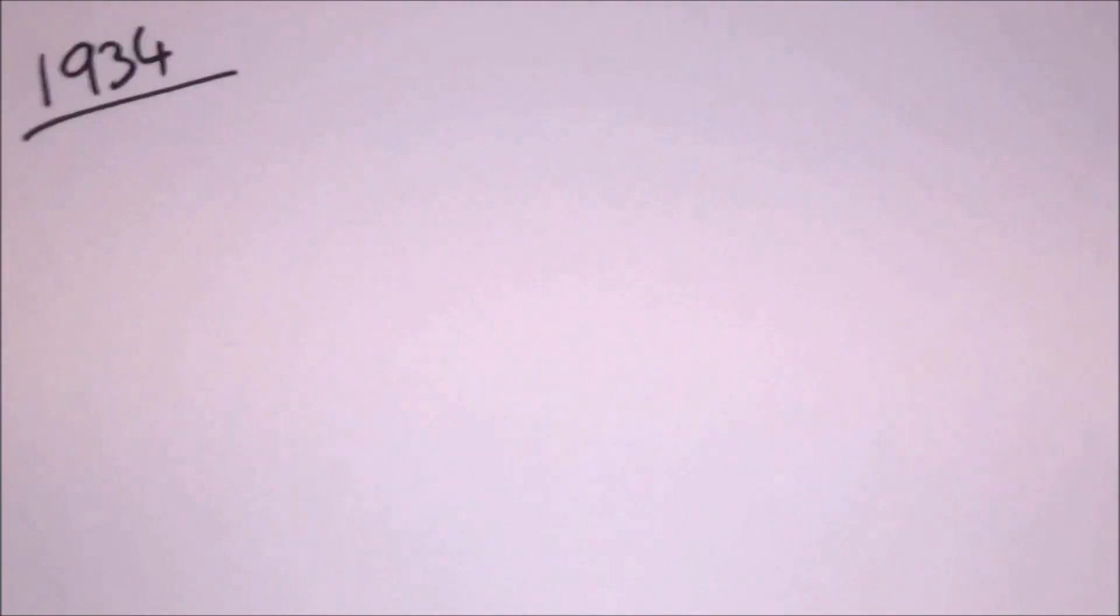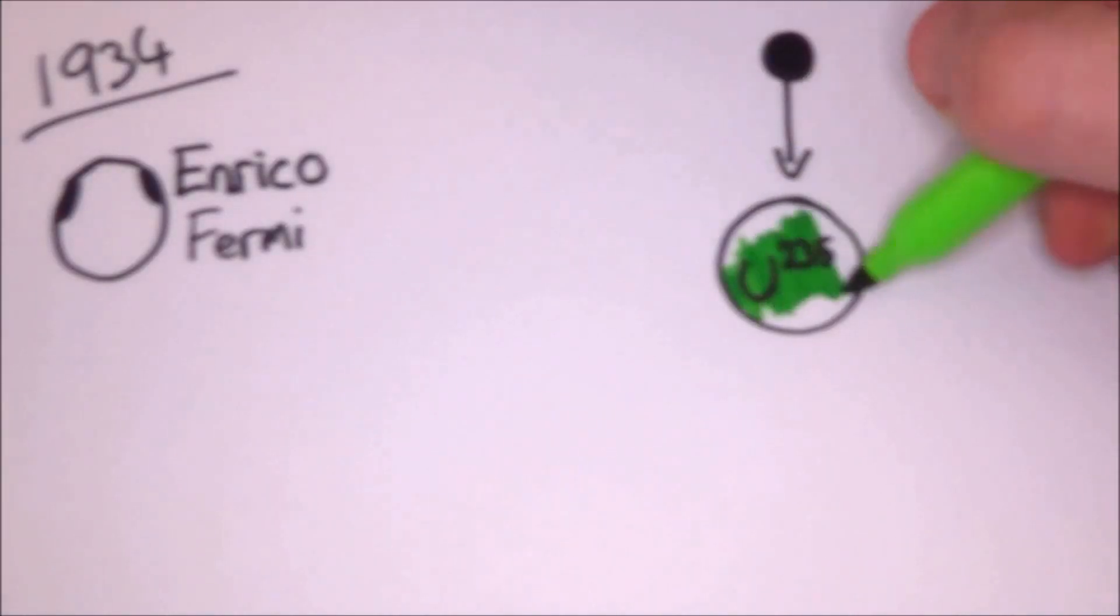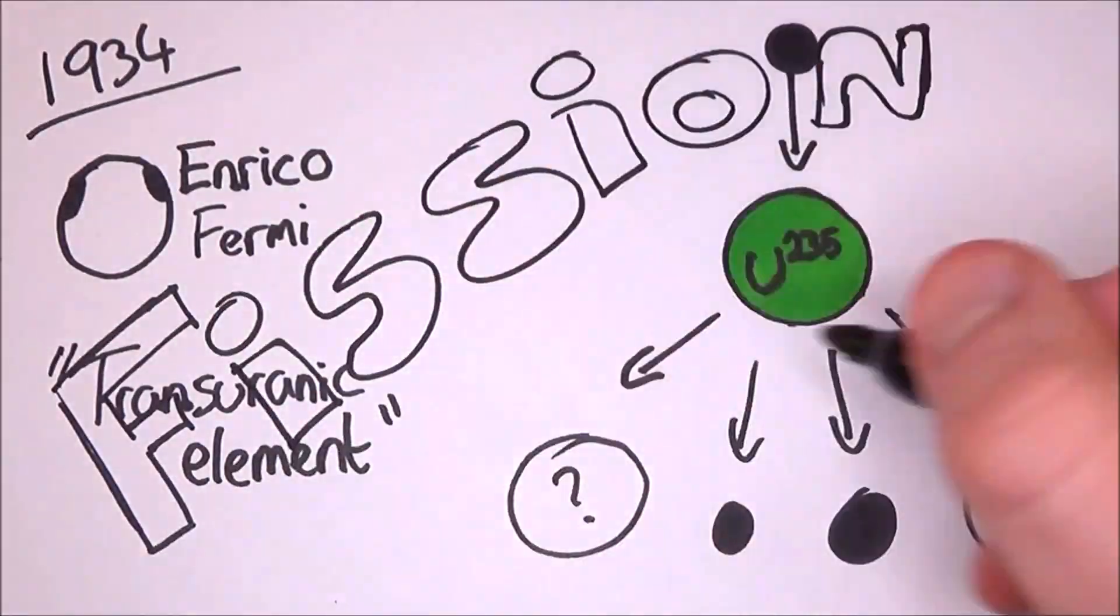It was in 1934 when Enrico Fermi irradiated uranium with neutrons. He believed that he had produced a transuranic element, but what he had actually done was the world's first nuclear fission.